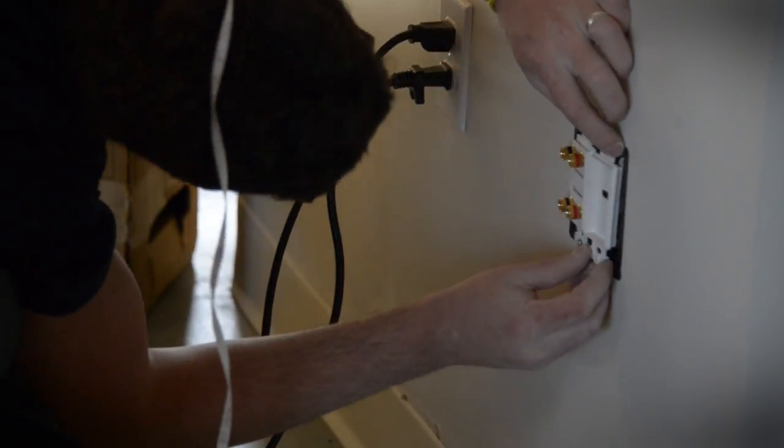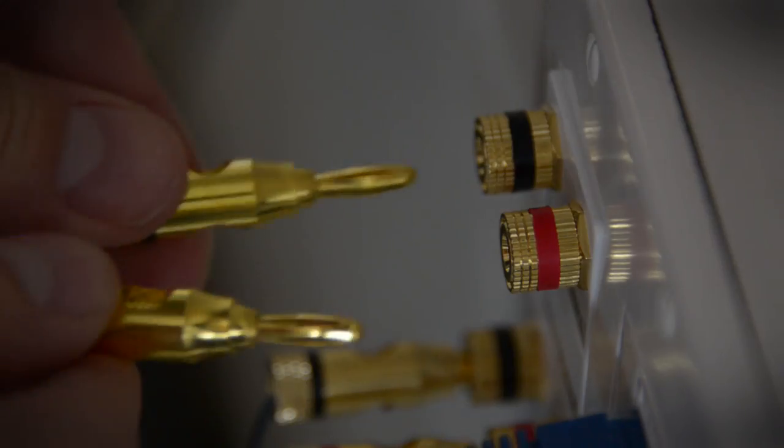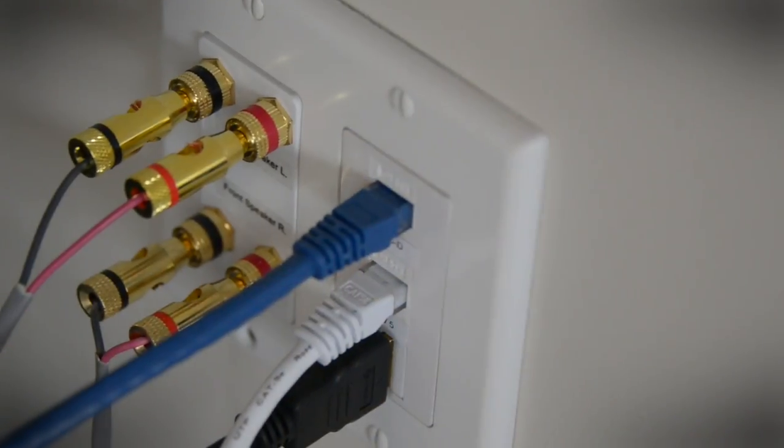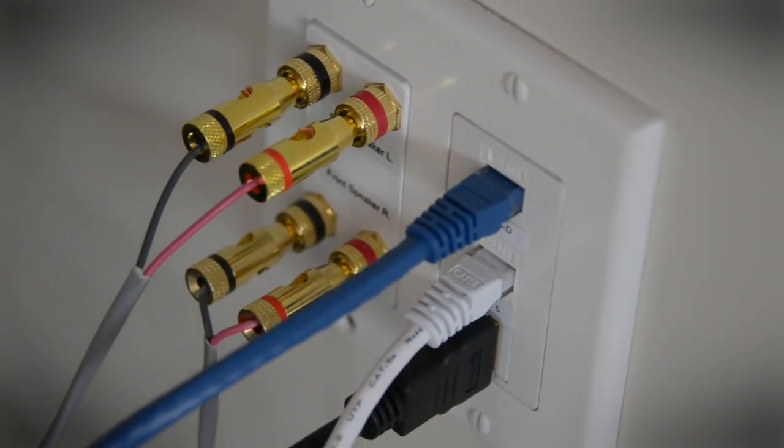Step one is to get your wiring in place. Now you can either do that yourself, but that's another do-it-yourself video, or you can call a low-voltage installer like we did. They put the wires in place and terminated them at the wall with this really gorgeous wall outlet with banana terminals.